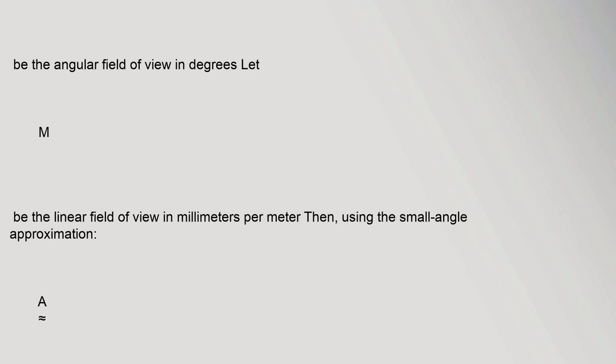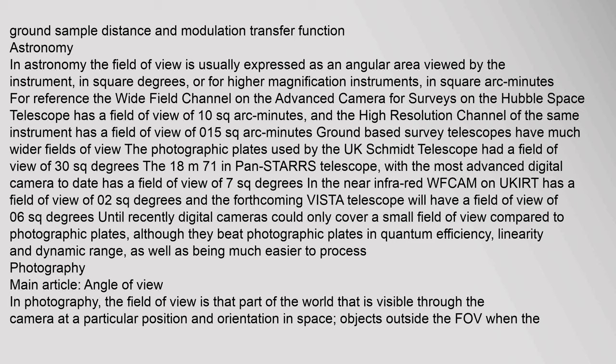Then, using the small angle approximation: a = 360/1000, relating to ground sample distance and modulation transfer function. Astronomy: In astronomy, the field of view is usually expressed as an angular area viewed by the instrument in square degrees, or for higher magnification instruments in square arc minutes. For reference, the wide field channel on the Advanced Camera for Surveys on the Hubble Space Telescope has a field of view of 10 square arc minutes, and the high resolution channel of the same instrument has a field of view of 0.15 square arc minutes. Ground-based survey telescopes have much wider fields of view; the photographic plates used by the UK Schmidt Telescope had a field of view of 30 square degrees.